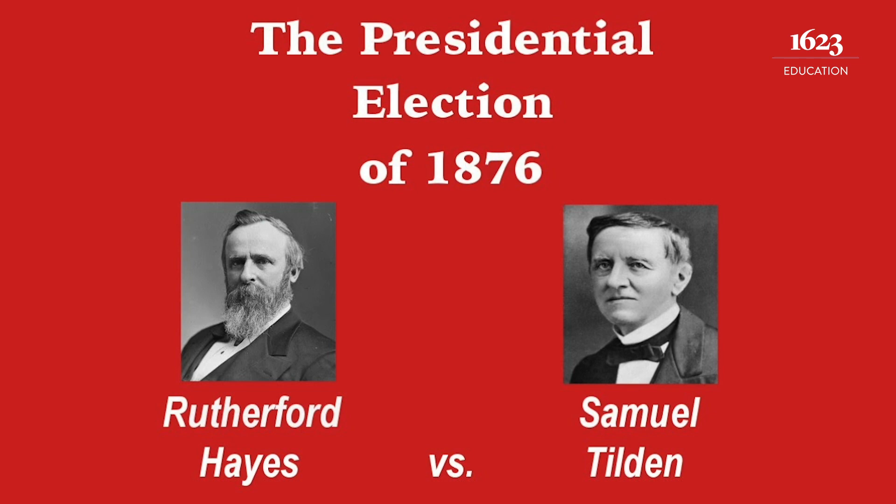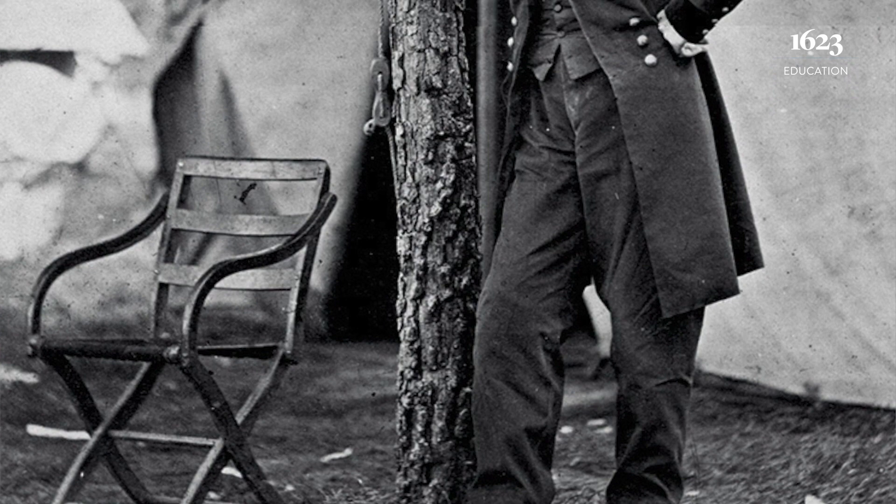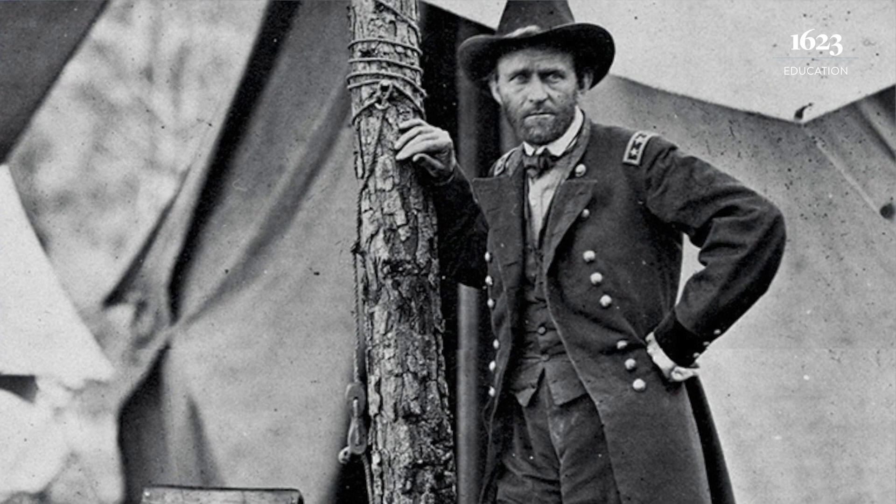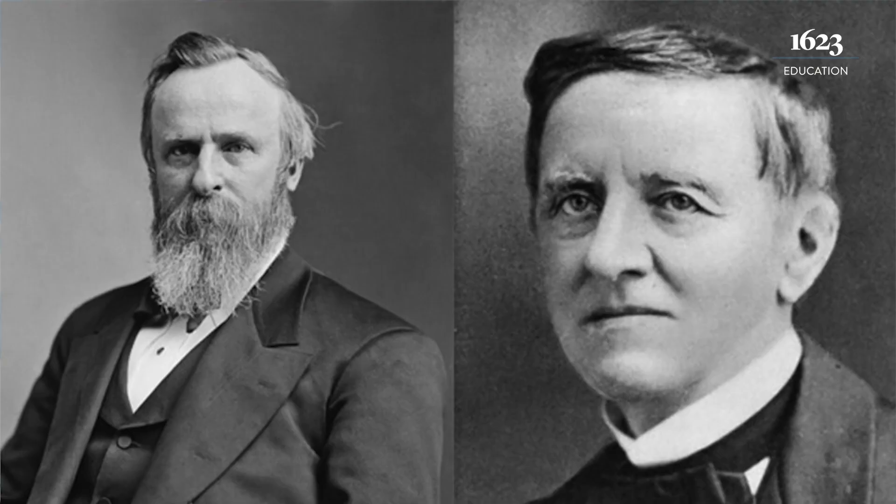The outgoing president was a two-termer, Ulysses S. Grant, who some wanted to run for a third term. Grant did not want to at the time, and there was nothing in the Constitution that said you could not run for a third term, but precedent had been established by George Washington that after two terms, the right thing to do is to step aside and let somebody else be president.